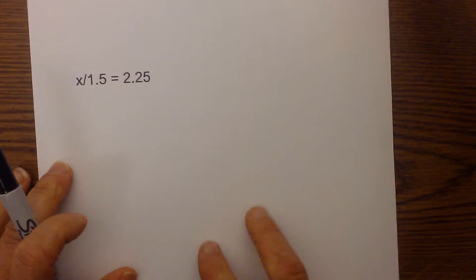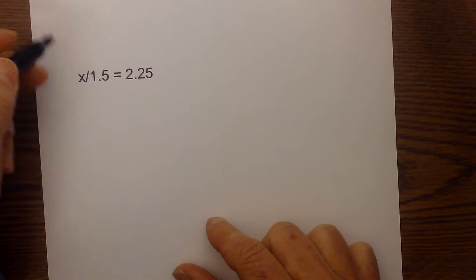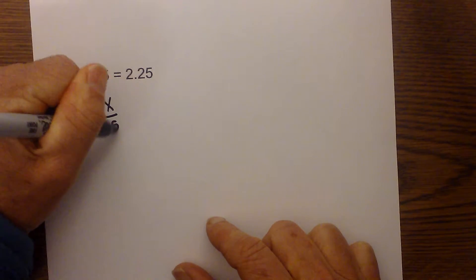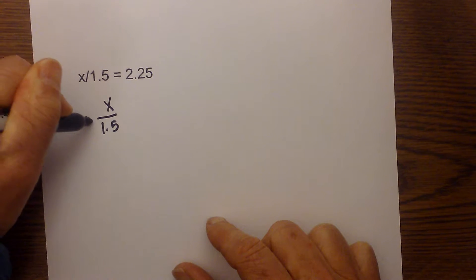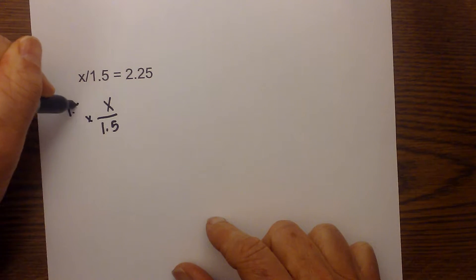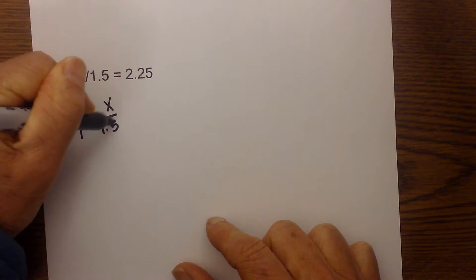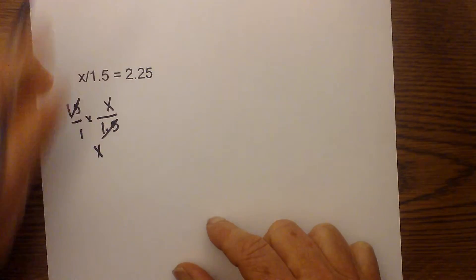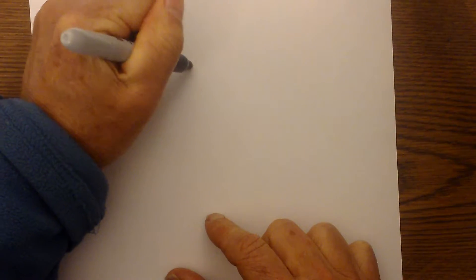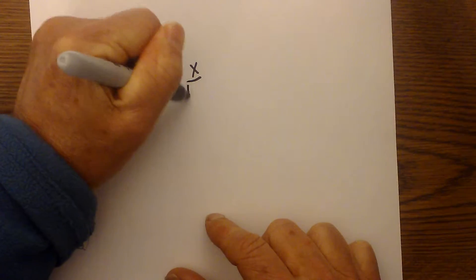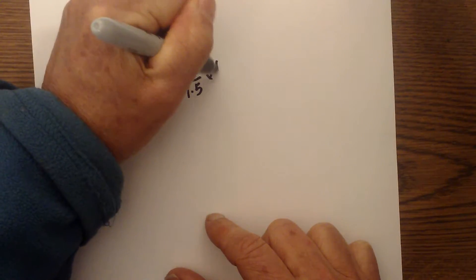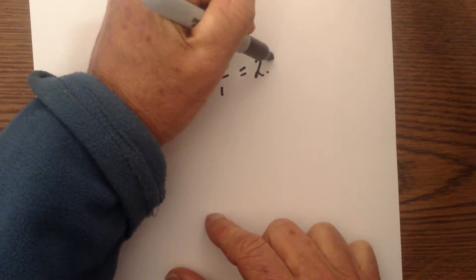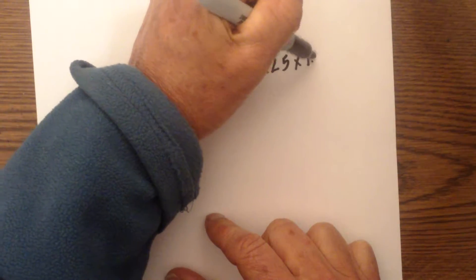Now we have one where we have division. And in order to undo the division you can look at this as x over 1.5. And so to undo this I just multiply by 1.5 and that will be over 1. And you can tell this cancels and that gives x over 1 which is x. So we have x over 1.5 times 1.5 over 1 equals. And what I do to one side I must do to the other side times 1.5.